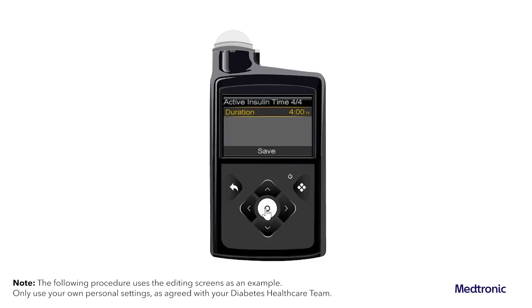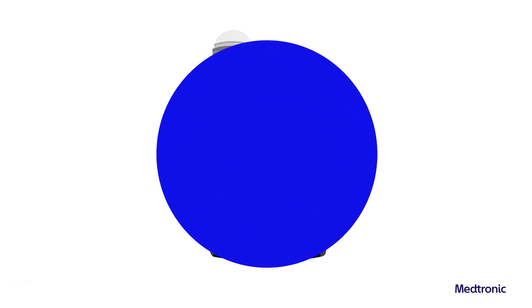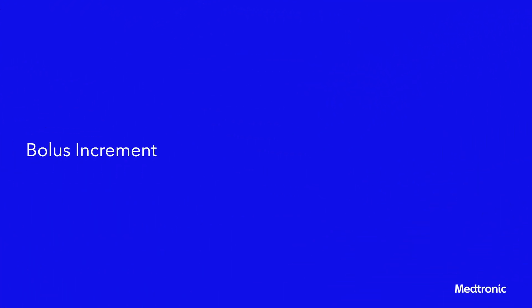The Active Insulin Time 4 of 4 screen appears. Enter the duration of the active insulin time and then press select. Setup is now complete. The bolus increment is the number of units that are increased or decreased with each button press for the bolus delivery amount.